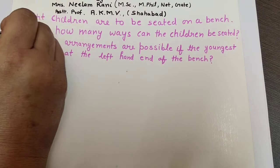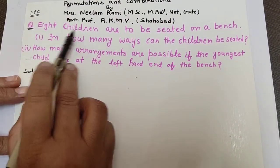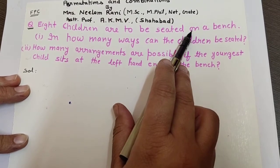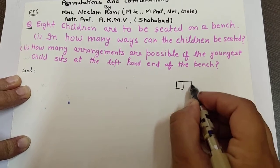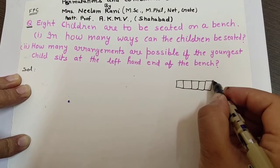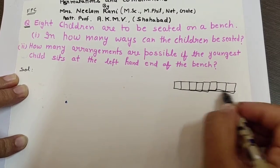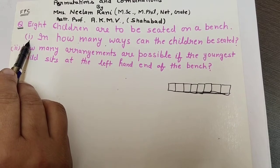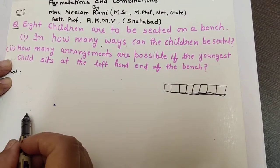One more question based on the fundamental principle of counting. Eight children are to be seated on a bench. You have eight positions on the bench — one, two, three, four, five, six, seven, eight. The first question is: in how many ways can the eight children be seated?